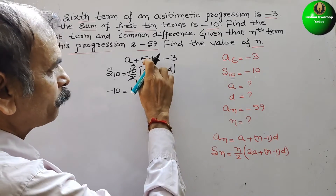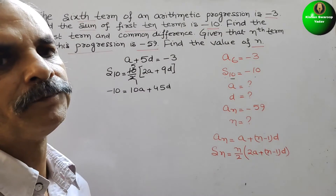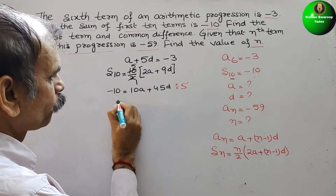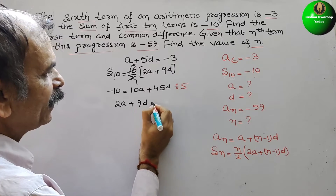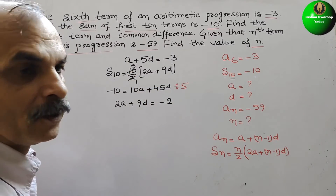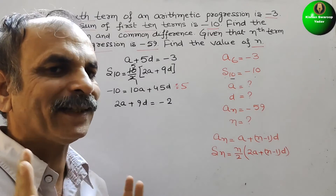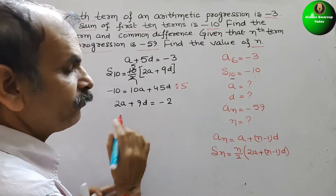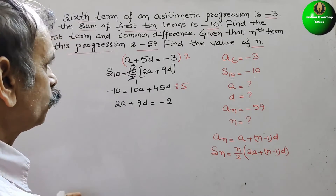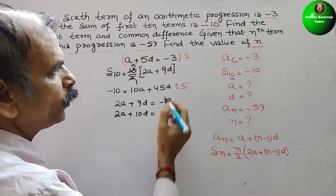Now we rearrange. Everything is divisible by 5, so dividing by 5 we get 2a plus 9d is equal to minus 2. This is our second equation. The first equation is a plus 5d equals minus 3. We use the elimination method, so we multiply the first equation by 2 to get 2a plus 10d is equal to minus 6.